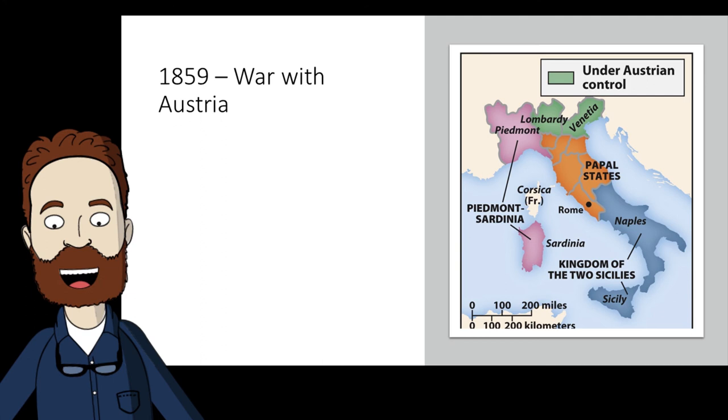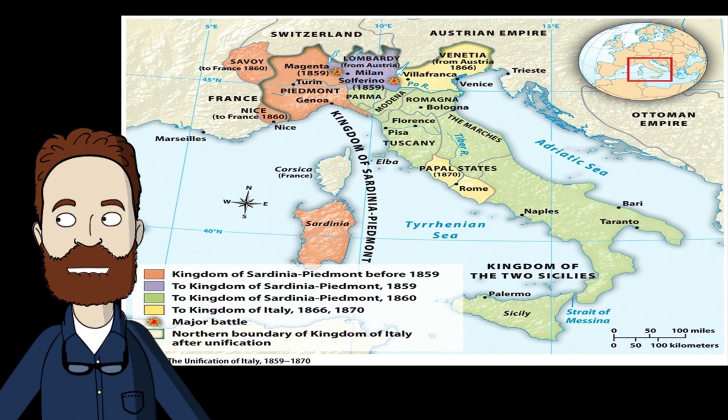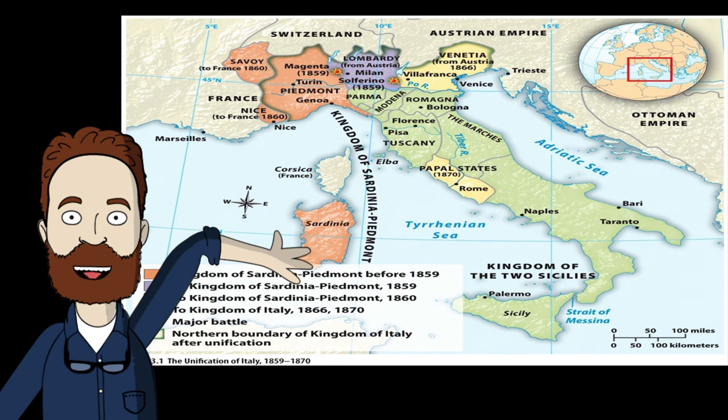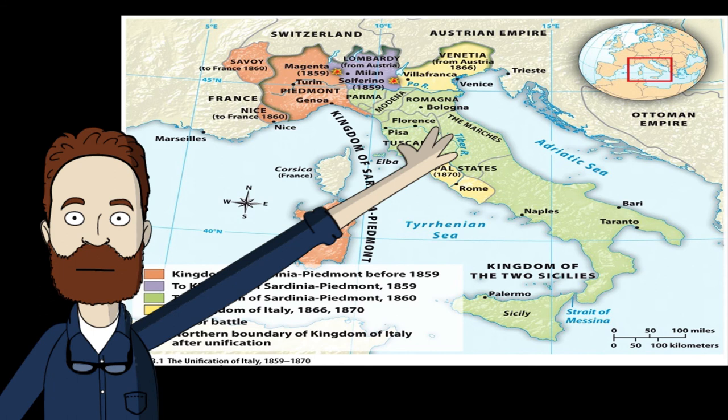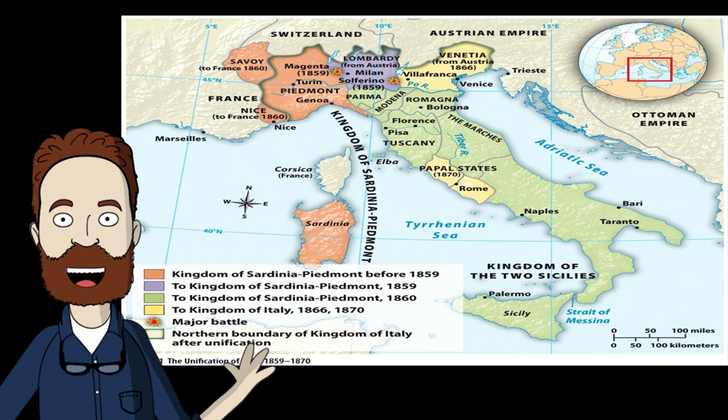Looking at this map, we can see the growth of Piedmont-Sardinia from its original state in 1859 through its transformation — first the acquisition of Lombardy, then the kingdom of Italy pushing Austria out of Venice, and finally the unification of the entire peninsula.